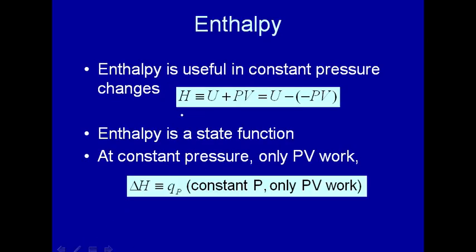Let's define enthalpy. Enthalpy will be defined as U plus PV. Now this definition was given in introductory chemistry, but it was sort of pulled out of thin air and no justification was given for it. Let's write enthalpy as U plus PV, or written a different way, U minus minus PV. And remember minus P dV is related to work — PV work. So what we're doing in defining enthalpy is that we're taking the internal energy and, in a sense, subtracting off the PV work.